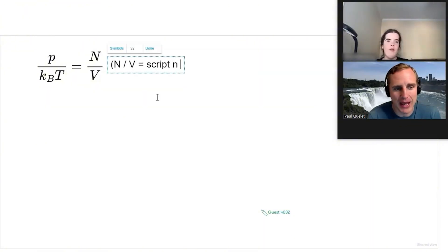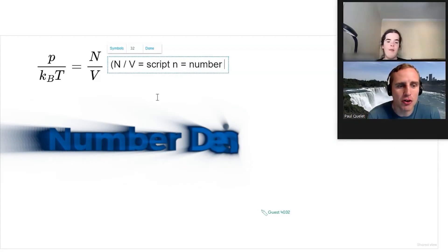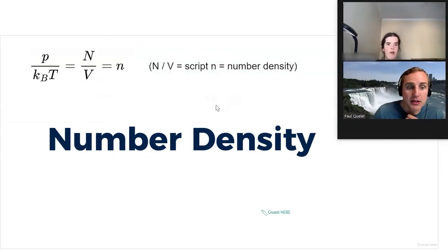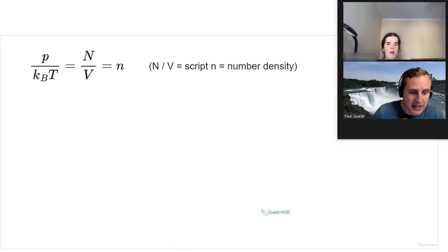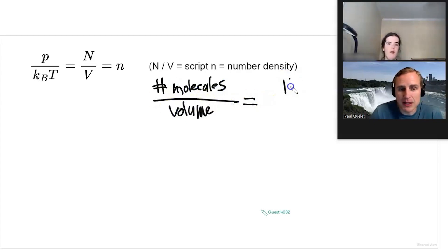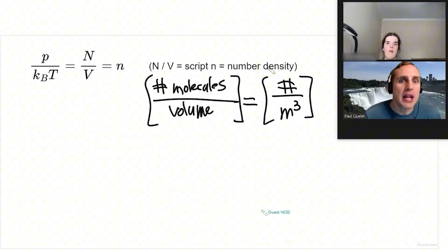N over V is sometimes called script n, which is called the number density. The number density is going to have units of number of molecules per volume, so the units are typically going to be number per meter cubed.